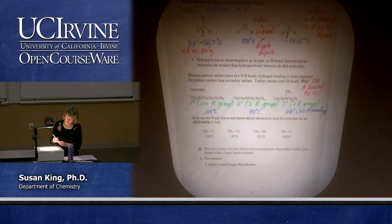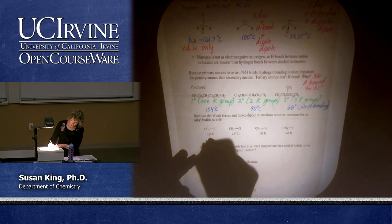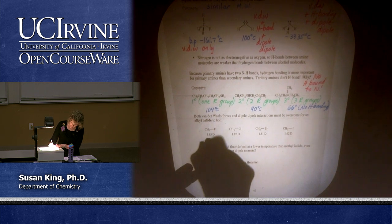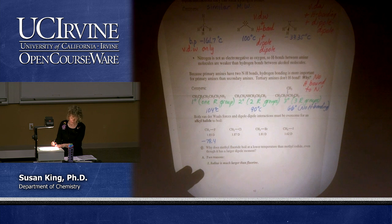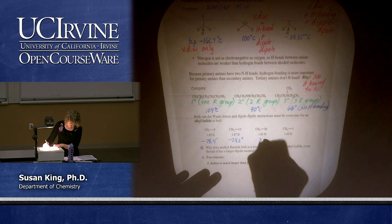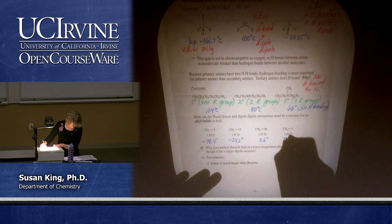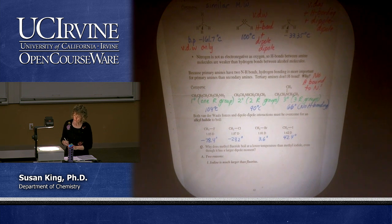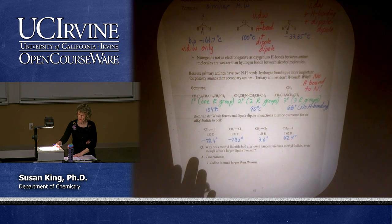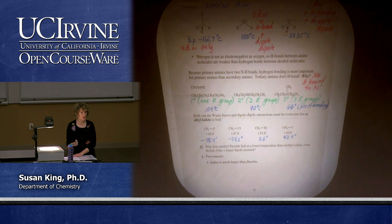Both Van der Waals forces and dipole-dipole interactions must be overcome for an alkyl halide to boil. Looking at the dipole moments for C–F, C–Cl, C–Br, and C–I bonds: methyl fluoride boils at -78.4°C, methyl chloride at -24.2°C, methyl bromide at 3.6°C, and methyl iodide at 42.4°C. Why does methyl fluoride boil at a lower temperature than methyl iodide even though it has a larger dipole moment? Because iodine is much larger and also extremely polarizable, so Van der Waals becomes even more important than dipole-dipole here.